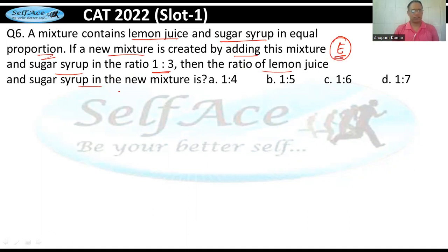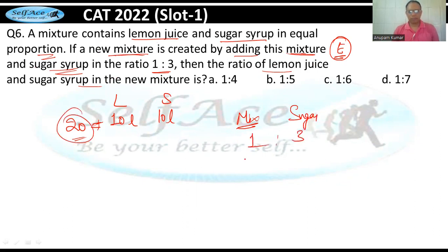You have lemon juice, you have sugar in equal proportion. Maalo 10-10 liter hai, 10 liter hai 10 liter hai. Total kitna hoga? 20 ho gaya. Ab woh keh raha hai yeh jo naya mixture hai wo kaise create ho raha hai? This mixture matlab yeh mixture and sugar in the ratio 1:3. 1:3, agar yeh 1 hai to yeh 3 hai. Lekin yeh mixture humare paas kitna hai? 20. Yeh kitna hoga? Because yeh iska 20 times ho gaya to yahan bhi 20 guna. Yeh nahi, 60 sugar hoga.